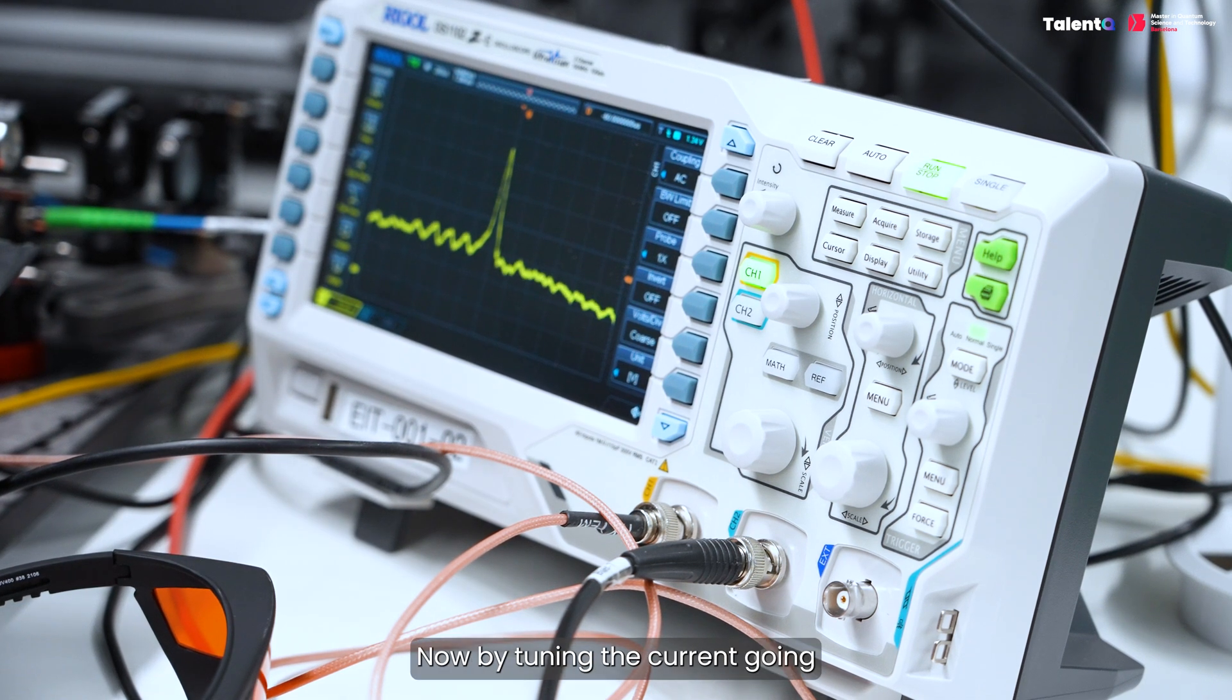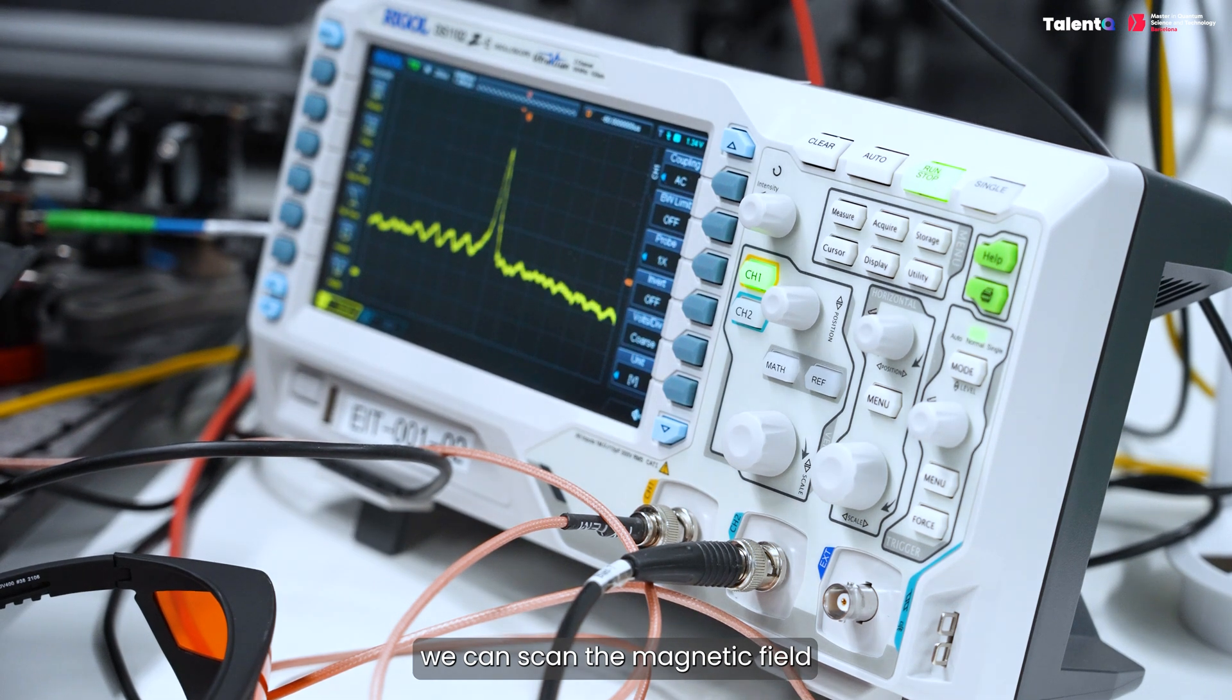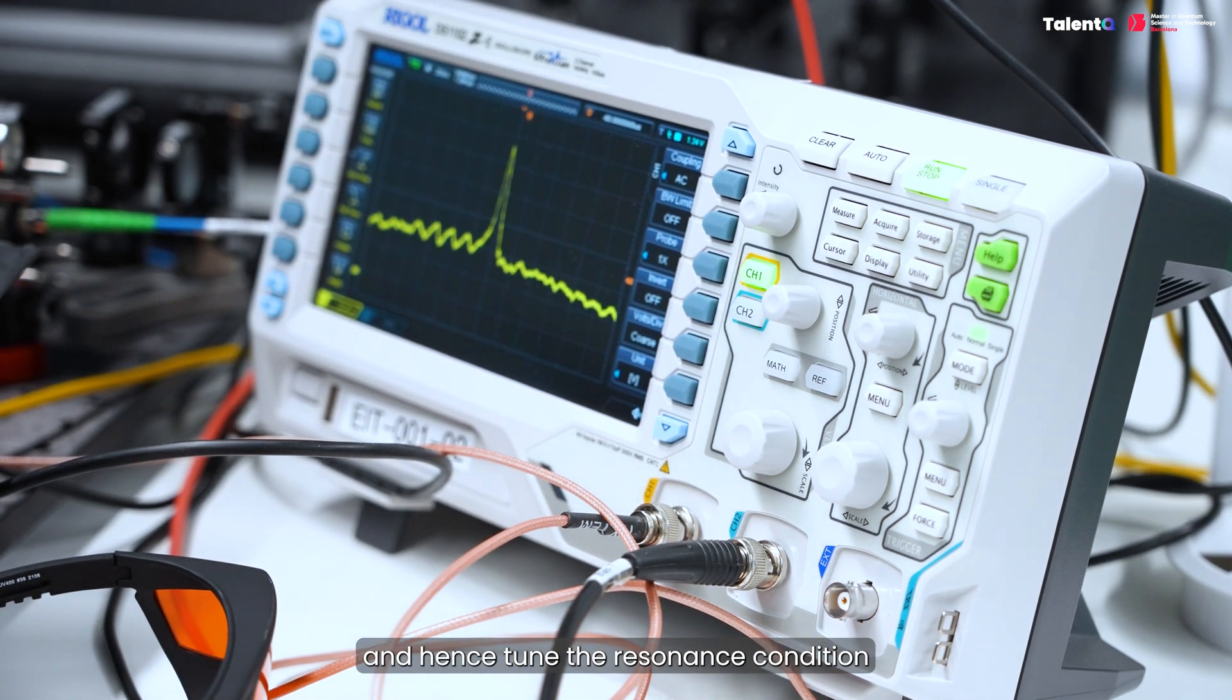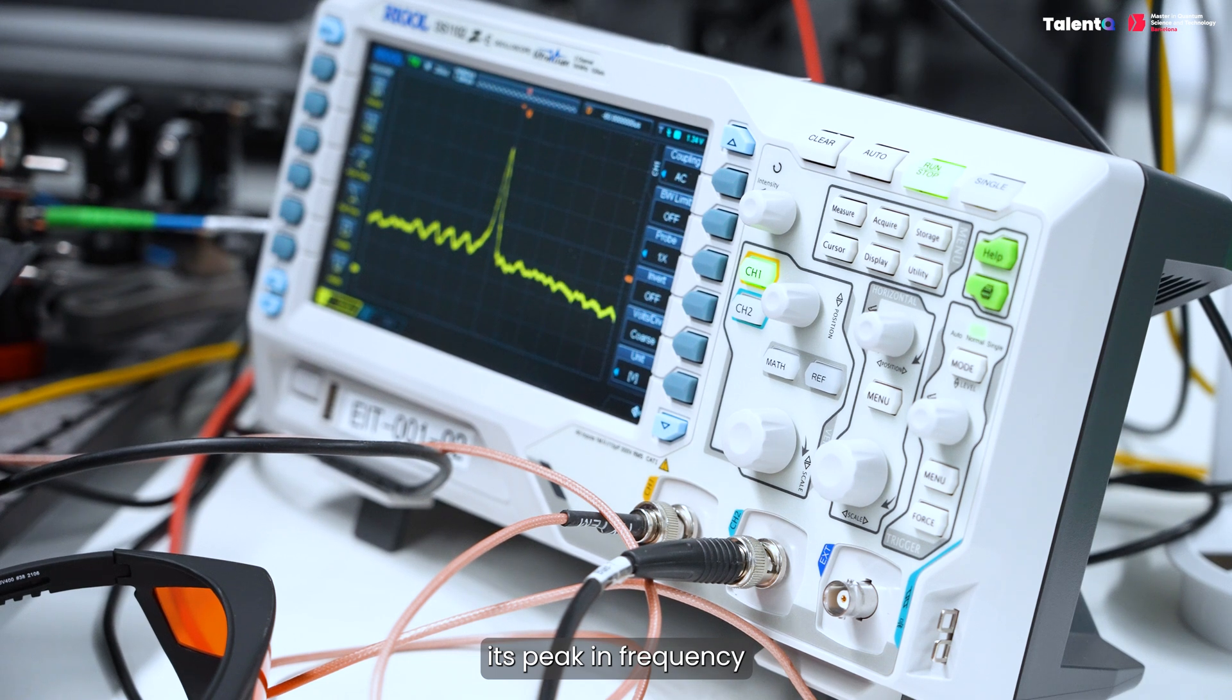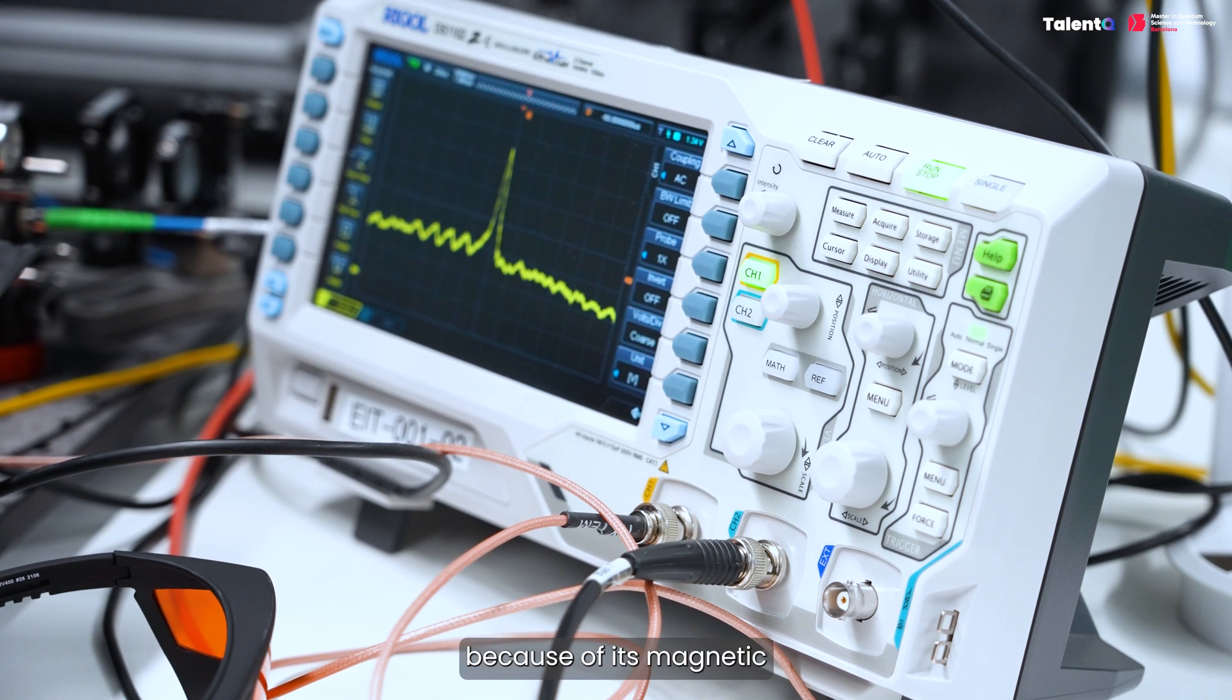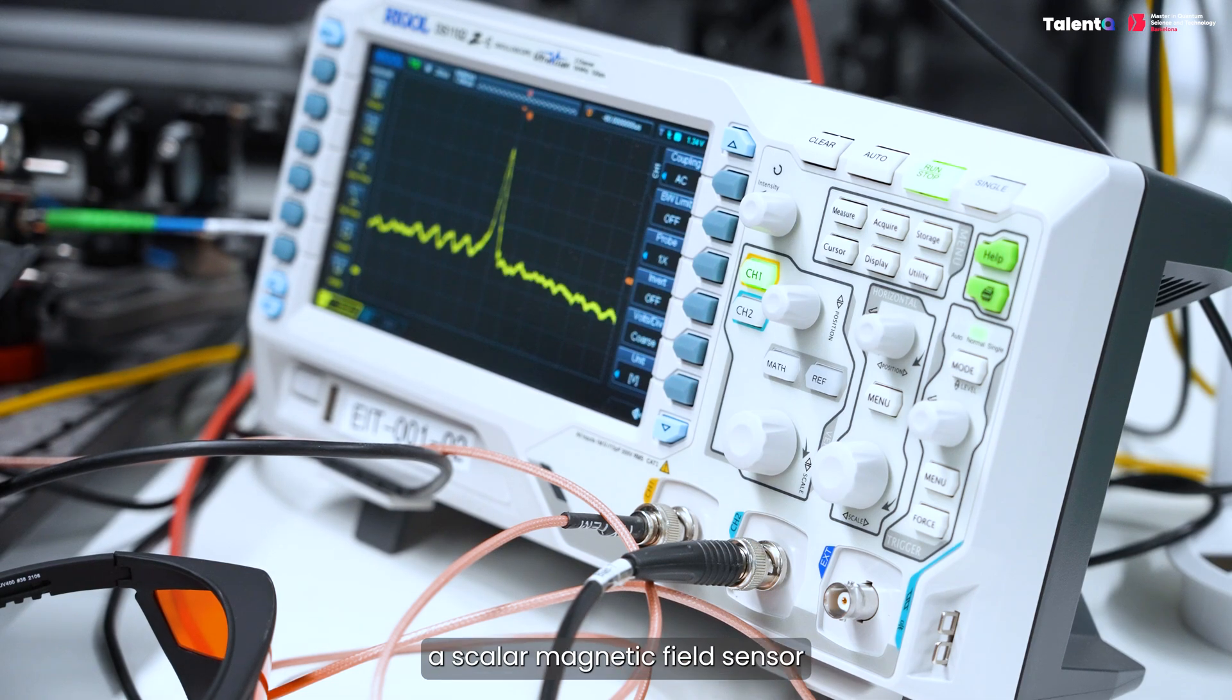Now, by tuning the current going through the coils around the vapor cell, we can scan the magnetic field and hence tune the resonance condition, which leads to a displacement of the peak in frequency. Note that, because of its magnetic field sensitivity, EIT can also be used as a scalar magnetic field sensor.